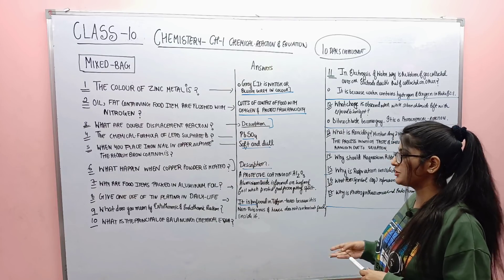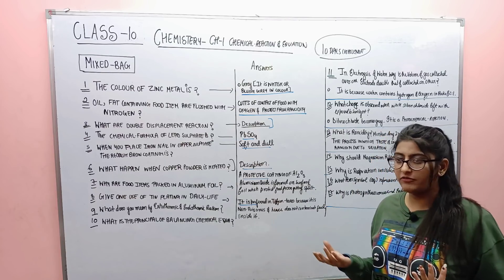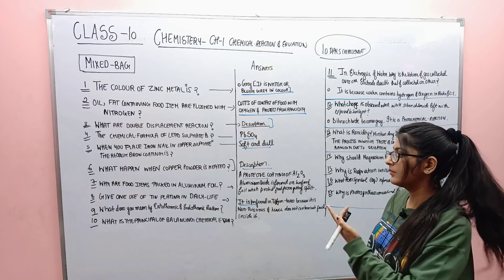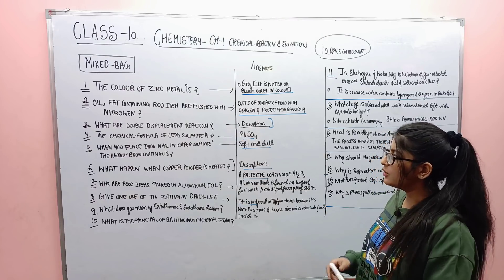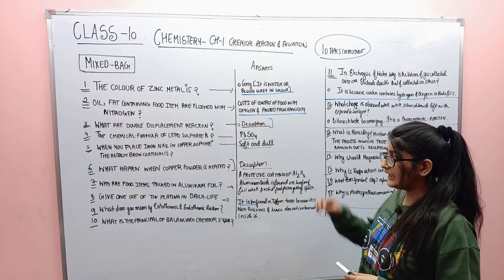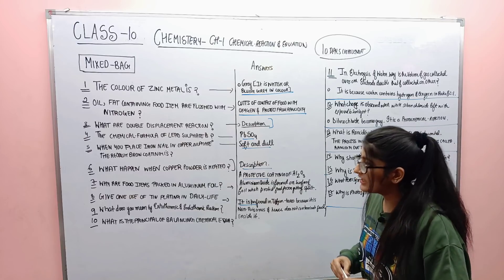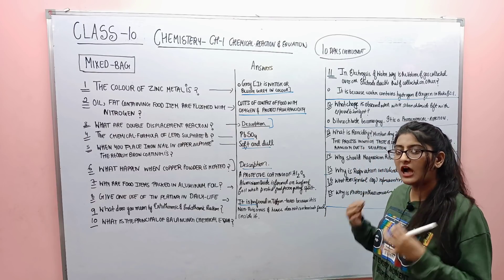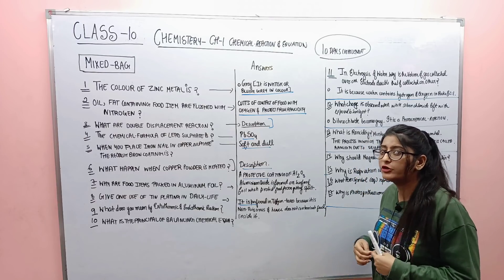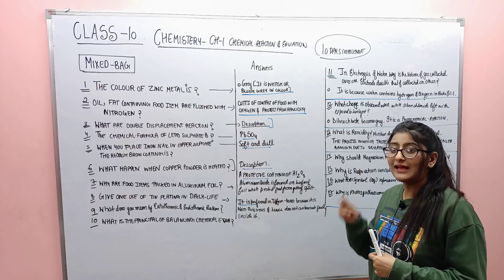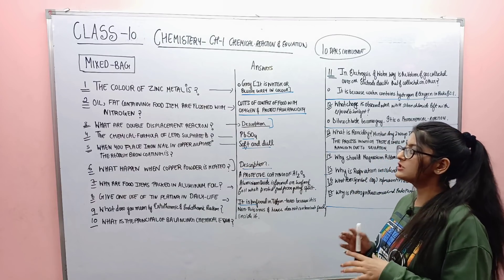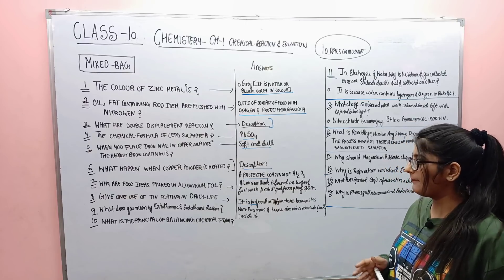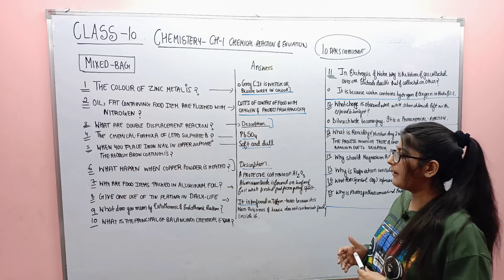Next question: the chemical formula of lead sulfate is PbSO₄. Next: when you place an iron nail in copper sulfate solution, a reddish-brown coating forms. What is that coating like? It is basically soft and dull.